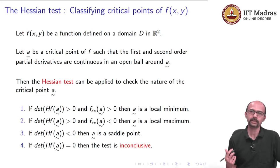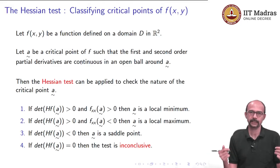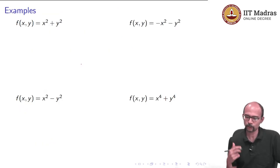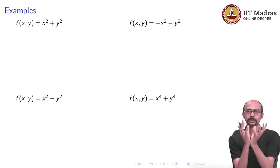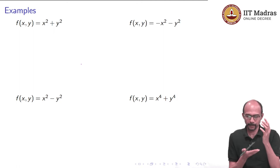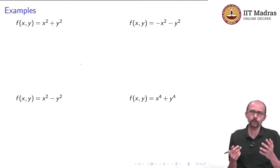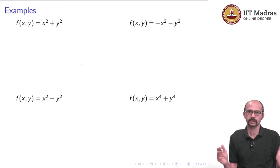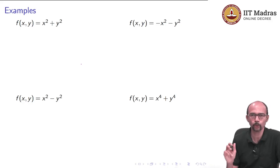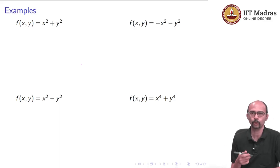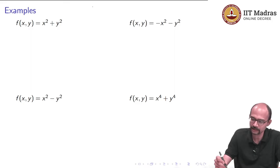Let us try to understand how to keep these cases in mind. Suppose I forget the Hessian test — how do I remember what happens? Let us look at some prototype functions we already know. For x² + y², we know this function looks like a bowl and (0,0) is a global minimum, since squares are positive. So the test should hopefully tell us that.